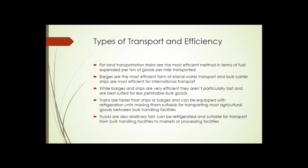Trains, being faster than ships or barges and able to be equipped with refrigeration, are suitable for transporting almost any agricultural good between bulk handling facilities — depots, grain elevators, and that sort of thing. You seldom see a train parked outside a grocery store, so from wherever the train stops, another method of transport — usually trucks — is required for final distribution. Trucks are also relatively fast and can be refrigerated, making them most suited for transport from bulk handling facilities to markets or processing facilities.